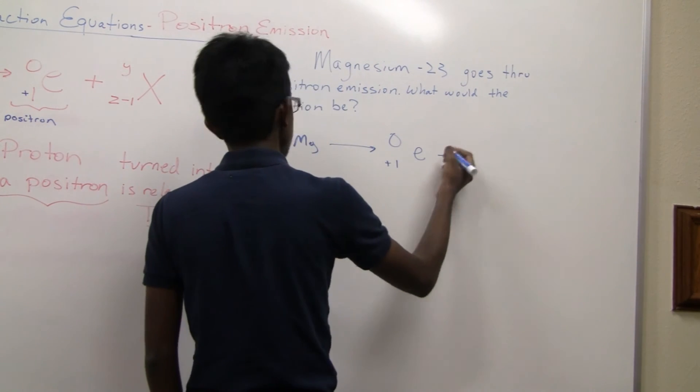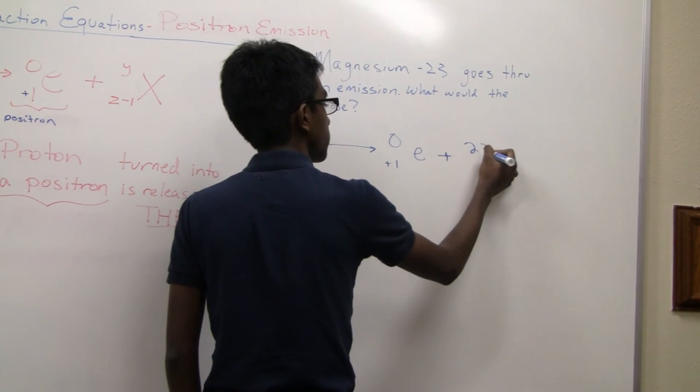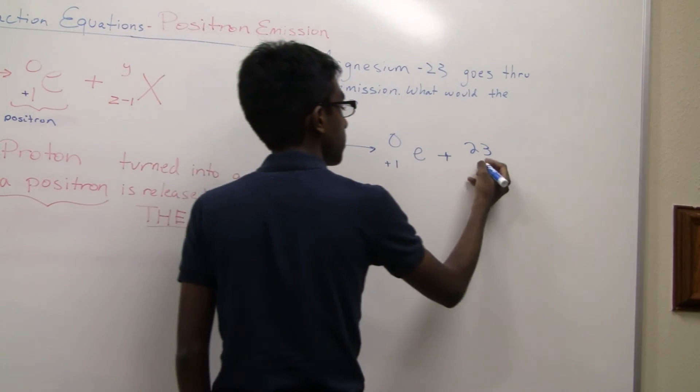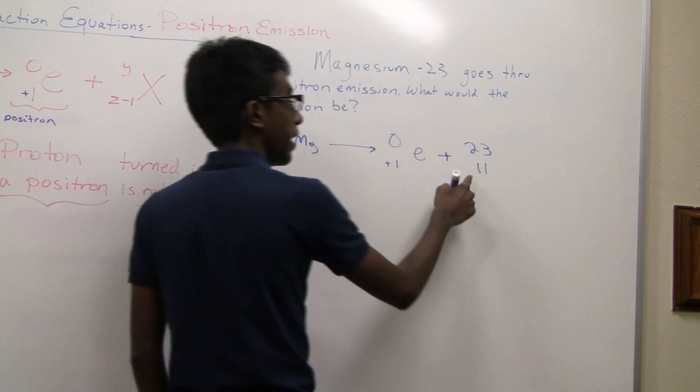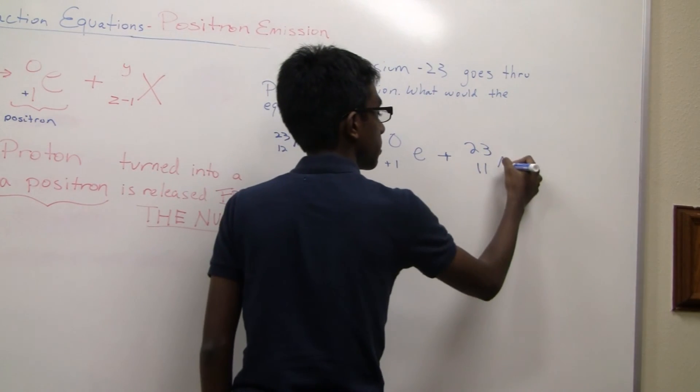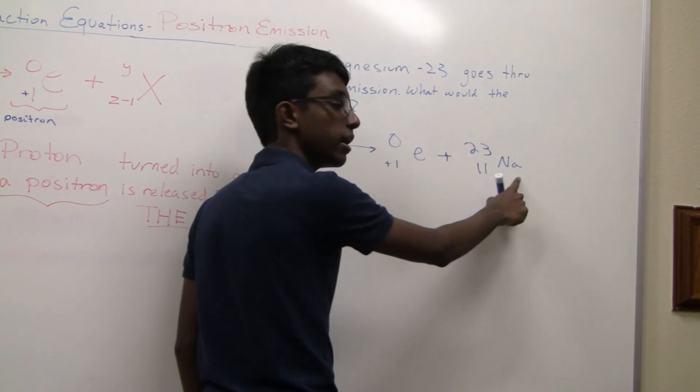So you're going to go ahead and emit your positron. You're going to keep the same mass number, but you're going to decrease your atomic number. And sodium has an atomic number of 11, so you write Na.